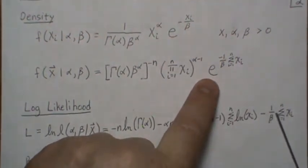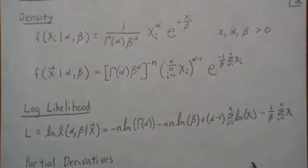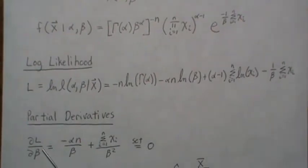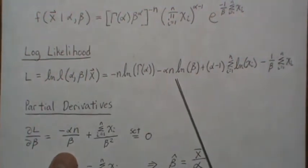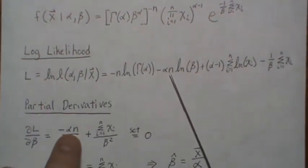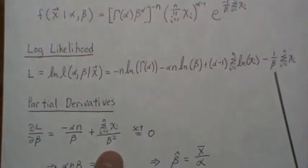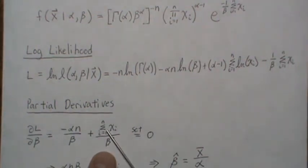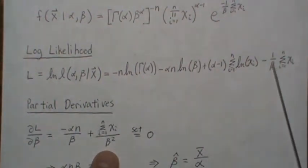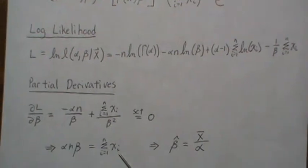Now start taking partial derivatives of these, and let's take it with respect to beta first. So here there's no beta, so here we get a minus n, and then 1 over beta. No betas here. This is a constant, so it's multiplied there, and then you end up with plus 1 over beta squared.